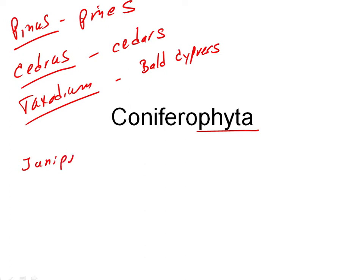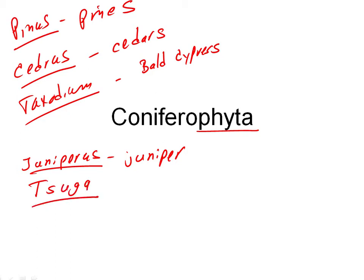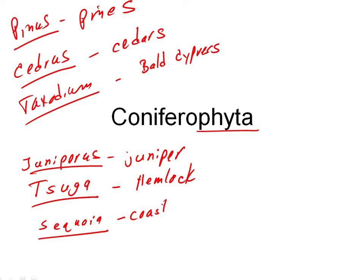Juniperus — that's the genus for the junipers. Tsuga — you might not know that generic name, but these are the hemlocks, very common, beautiful trees of the Appalachian Mountains. Unfortunately, now endangered because of an invasive bug, the woolly adelgid, which is killing them off. And then some trees of the western United States: Sequoia, the currently largest trees in the world — these are the coastal redwoods — and Sequoiadendron, the giant redwoods of the Sierra Nevadas.